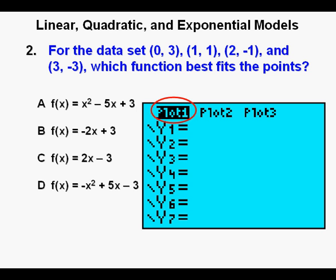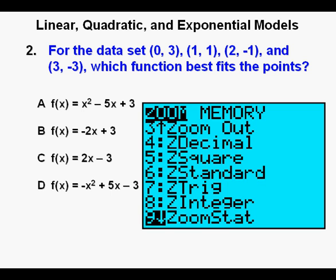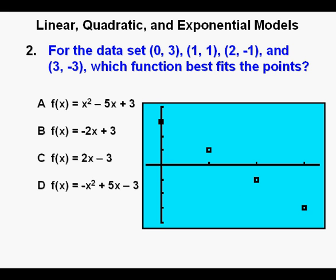Next, press the ZOOM key, scroll down to 9, ZOOM STAT. Press ENTER. We see all the 4 points here. It looks like it's linear.